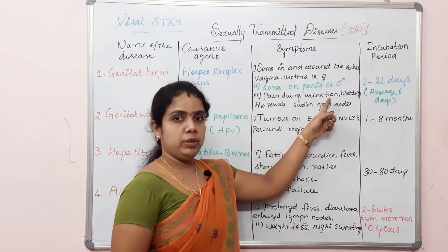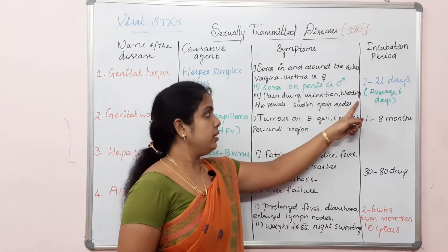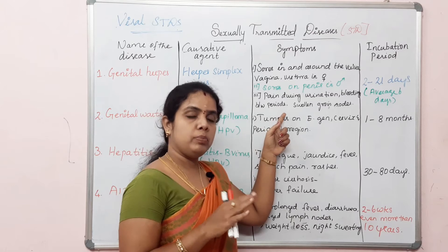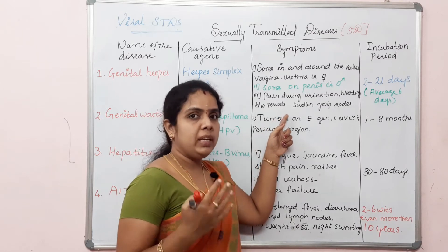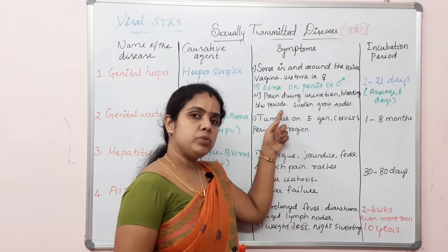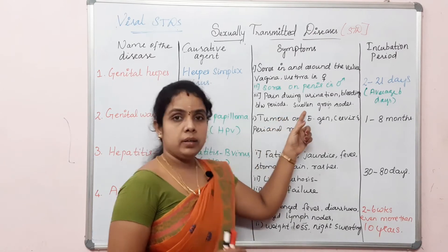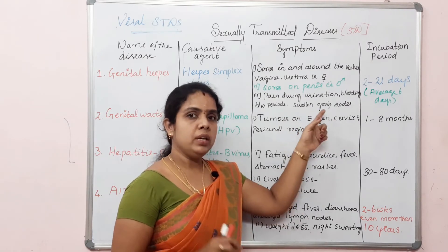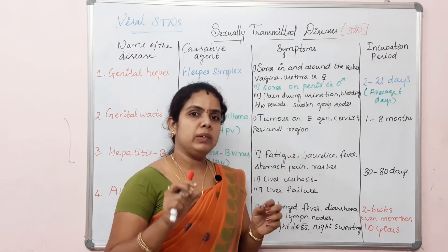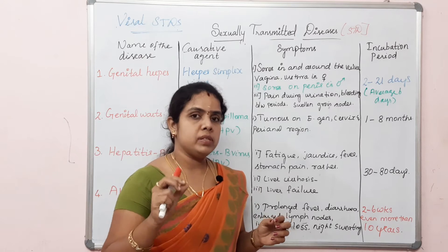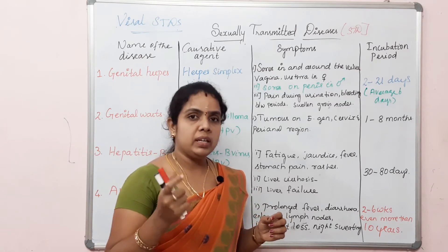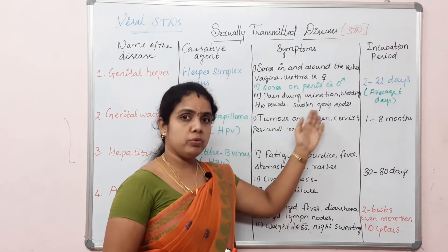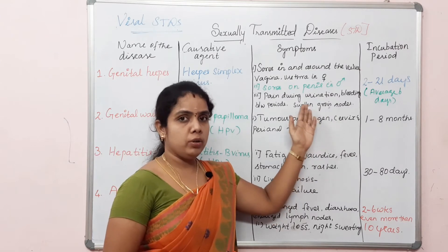Most important symptoms of genital herpes include: pain during urination, burning sensation during urination, bleeding between periods, and swollen groin lymph nodes.